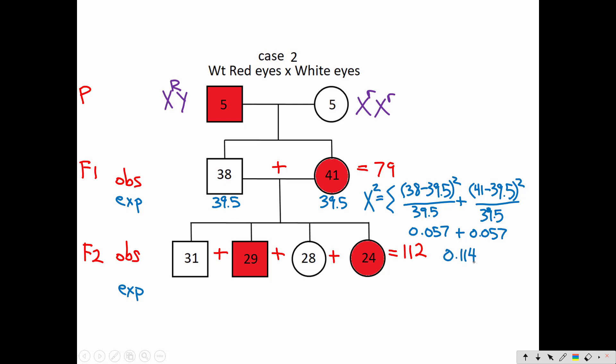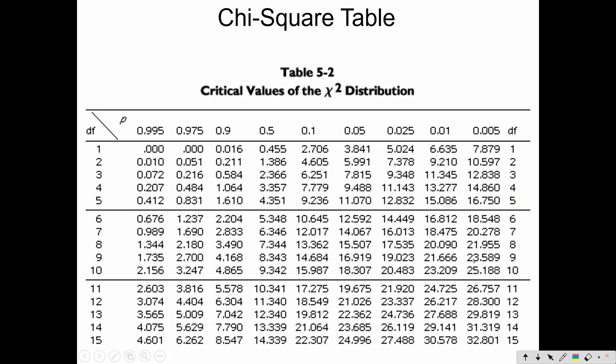And that number is going to be way less when I look at my chi-square table. With one degree of freedom, .05 probability value, my number 0.114 is way less than 3.841. So I fail to reject my hypothesis.